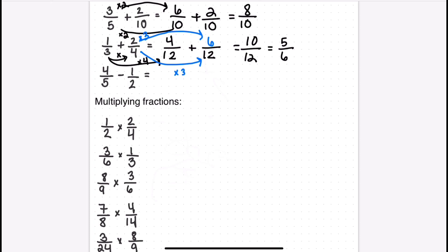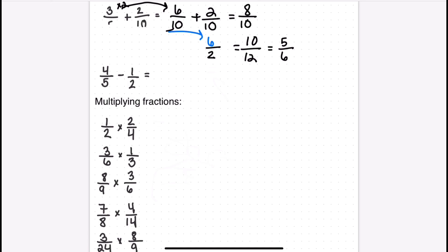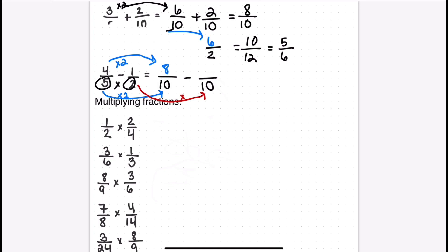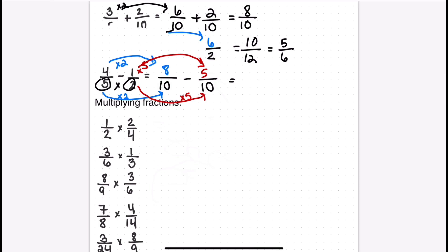In the last example we have subtraction. I don't have the same denominator, and two and five can't easily go into each other, so I multiply them together: five times two equals ten. For four fifths, I multiply four by two to get eight over ten. On the right side, I multiply one by five to get five over ten. So eight tenths minus five tenths leaves me with three tenths.